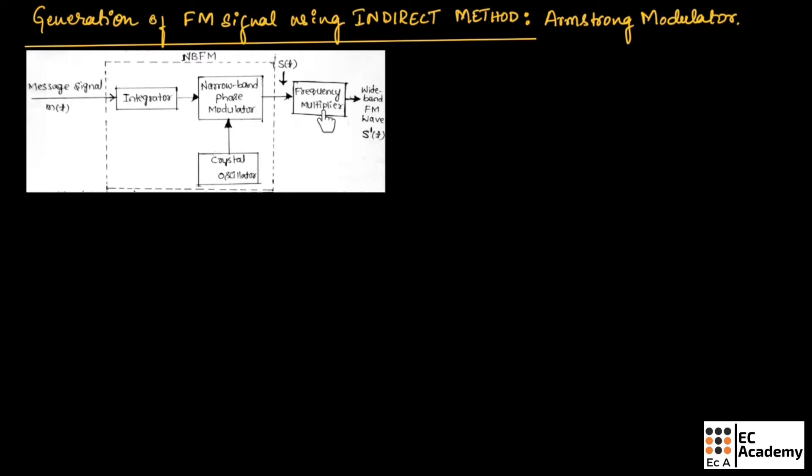The frequency multiplier produces the wide band FM signal that is indicated by S'. This indirect method of FM generation scheme is also known as Armstrong Wide Band Frequency Modulator.